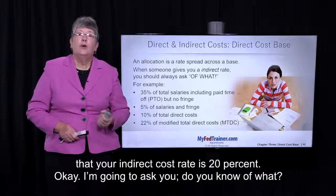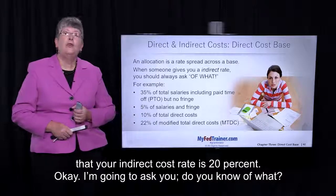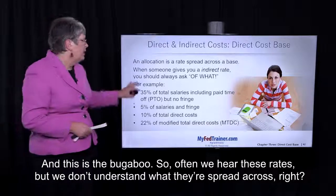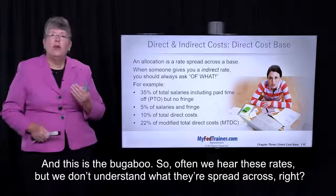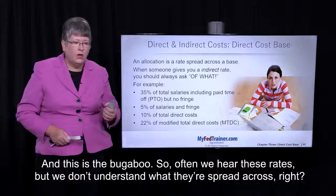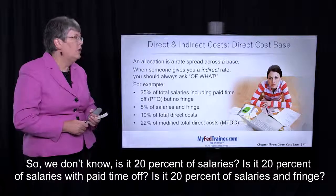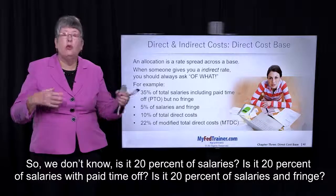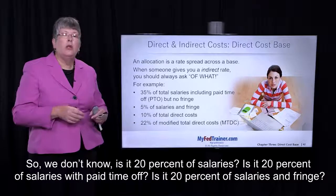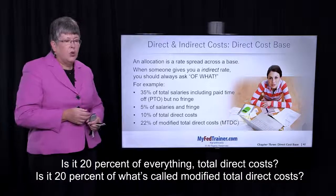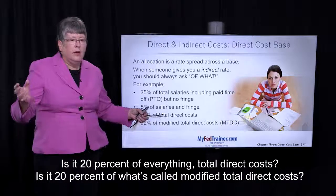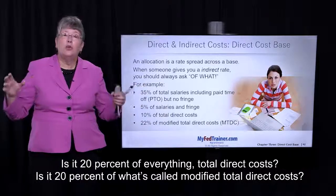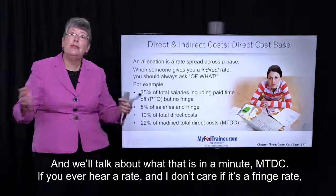Let's say that your indirect cost rate is 20%. I'm going to ask you: do you know of what? And this is the bugaboo. Often we hear these rates, but we don't understand what they're spread across. We don't know — is it 20% of salaries? Is it 20% of salaries with paid time off? Is it 20% of salaries and fringe? Is it 20% of everything, total direct costs? Is it 20% of what's called modified total direct costs — MTDC? And we'll talk about what that is in a minute.